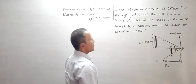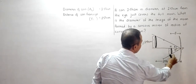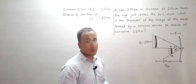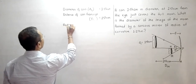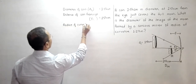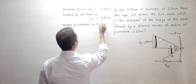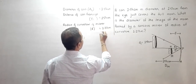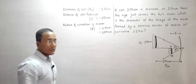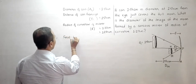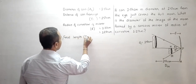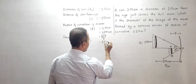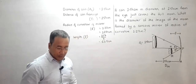We need to find the diameter of the image of the moon formed by a concave mirror. The radius of curvature of the mirror is R = 1.27 meters = 127 centimeters. This gives us a focal length f = R/2 = 127/2 = 63.5 centimeters.